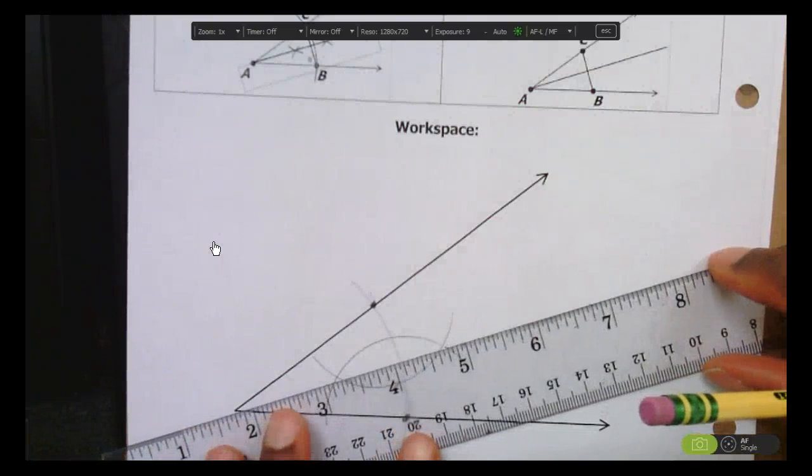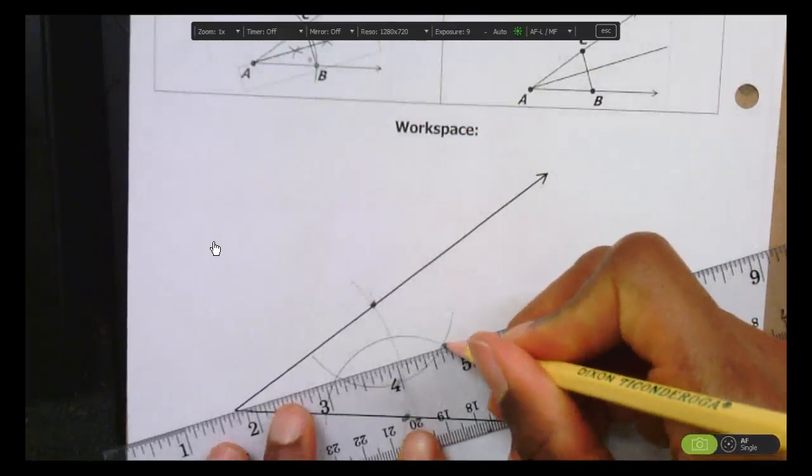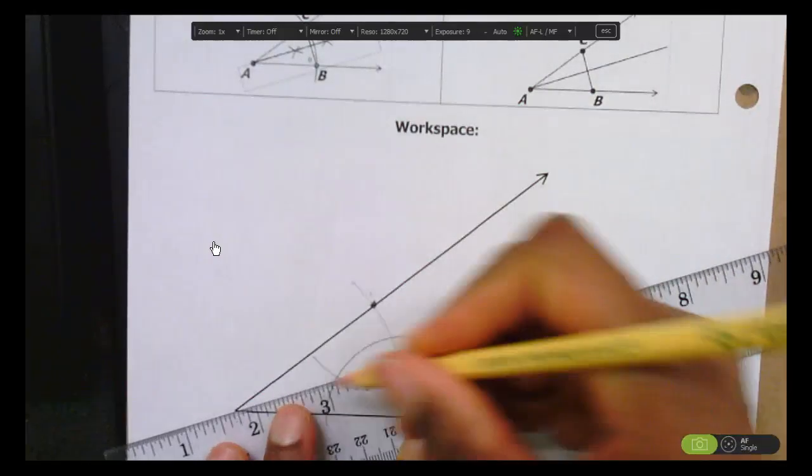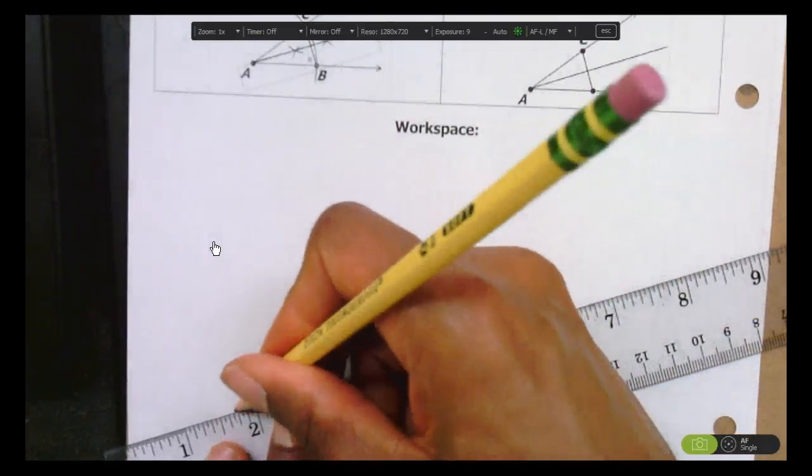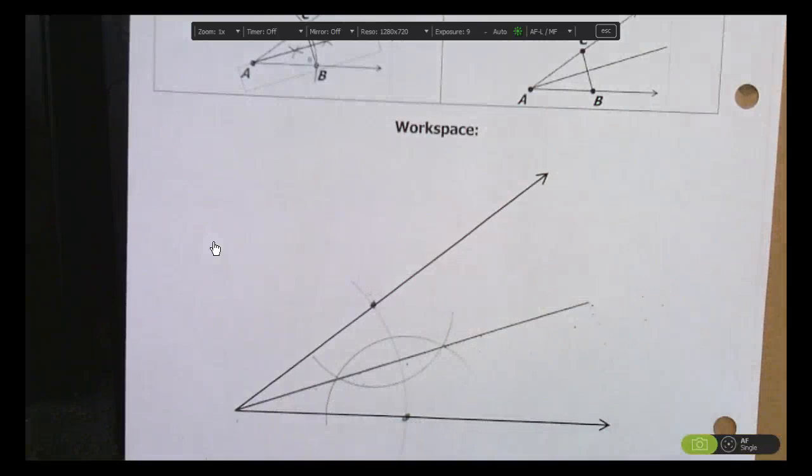So just all these should line up. The two intersection points and the vertex of the angle should all line up nicely. And that's how you construct an angle bisector.